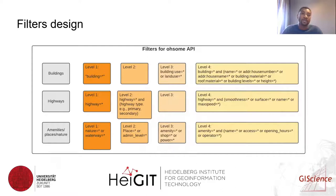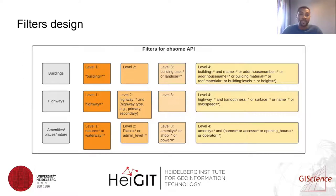In designing the classification schema we grouped elements into three main mapping categories: buildings, highways, and amenities. We designed several filters and boolean operations to be able to extract the different levels of local data.